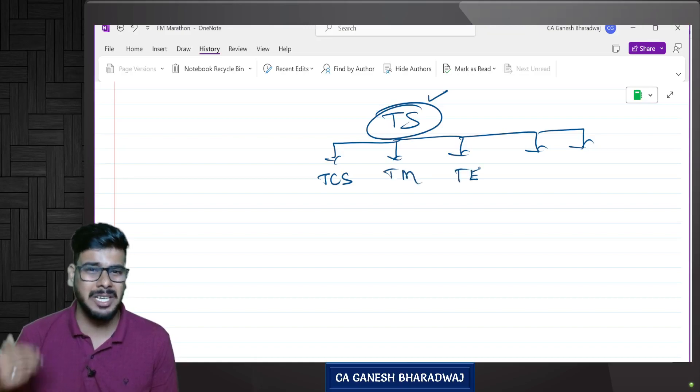Tata Sons has many group companies inside it like Tata Consultancy Services, Tata Motors, Tata Elxsi, Tata Power and more. Tata was already into so many businesses. They wanted to enter into the automobile business, so they started Tata Motors.